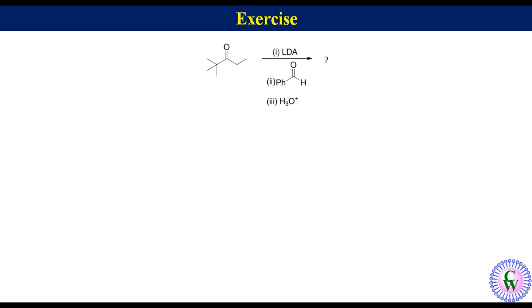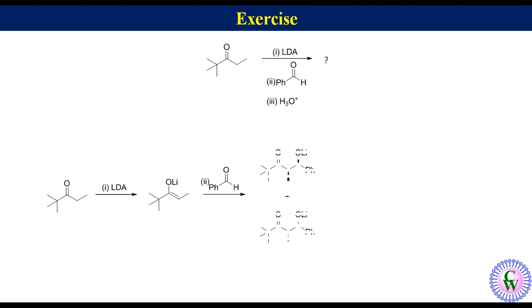Now let's do some exercise. Suppose we have to predict the product for the reaction of ethyl t-butyl ketone with benzaldehyde in the presence of LDA as a base. Ethyl t-butyl ketone in the presence of LDA produces cis enolate because of the bulky t-butyl group. Since cis enolate after reaction with aldehyde gives syn-aldol, this enolate after reaction with benzaldehyde will give a racemic mixture of the lithium salt of syn-aldol, which after acidic workup will produce a racemic mixture of syn-aldols.